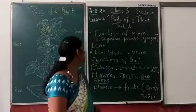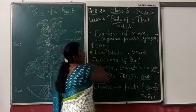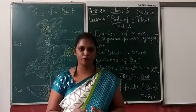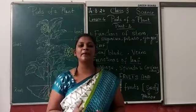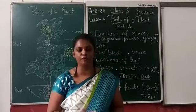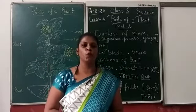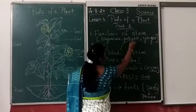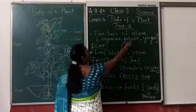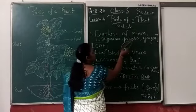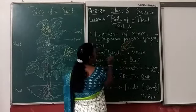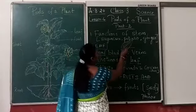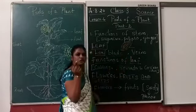Now let's talk about the leaf — aapko leaf के बारे में क्या पता है? First thing you can say is that it is helpful to produce food. पहले chapter में हम लोग देखने हैं — a plant has the capability to prepare its own food with the help of sunlight, minerals, and water. Now let's look at the structure. A leaf is first of all broad. This broad part is called the leaf blade. And then there are veins — a stalk connects to the stem.